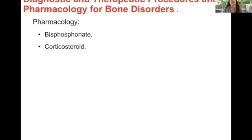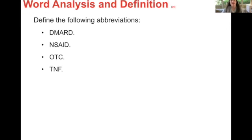Pharmacology: if anyone's going to work in pharmacology, like a pharmacist or clinician, you have to know these. Bisphosphonates are drugs that reduce the rate of bone reabsorption. Corticosteroids help reduce pain and inflammation — for osteoarthritis and rheumatoid arthritis. Abbreviations: DMARD is disease-modifying anti-rheumatic drug. NSAID is non-steroidal anti-inflammatory drug. OTC is over-the-counter. And TNF is tumor necrosis factor — as soon as you remember what necrosis means, you understand that one better.